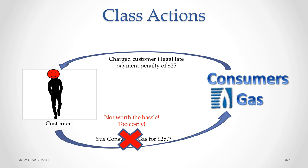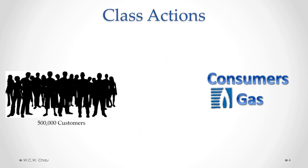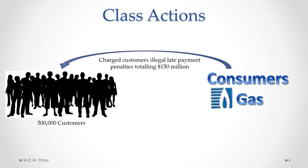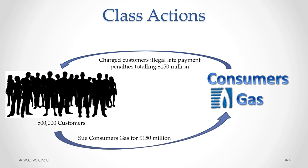With the ability to start a class action, instead of focusing on just one customer, we can look at all of the affected customers. In this case, there were 500,000 affected customers. That whole group of customers was charged illegal late penalties of $150 million in total. So those customers as a group, through a class action, can sue Consumers Gas for the whole $150 million. By being able to use a class action to recover the late payment penalties, the customers have a practical and useful way of recovering the penalties they have paid.